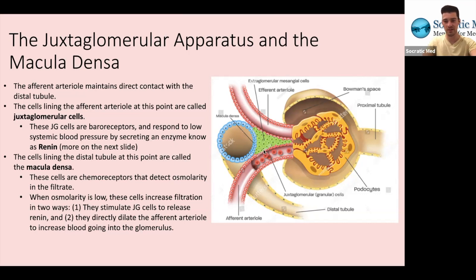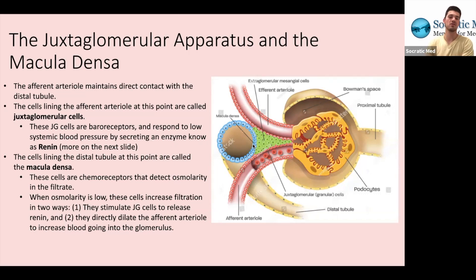We're looking at the juxtaglomerular cells lining the afferent arteriole. These are baroreceptors, which means they respond to changes in pressure in your blood vessels. They specifically respond to low systemic blood pressure and secrete renin. These cells touch up against the distal tubule, and the cells lining the cross-sectional area at the exact point it touches the afferent arteriole are known as the macula densa. The JG cells are baroreceptors; the macula densa are chemoreceptors.